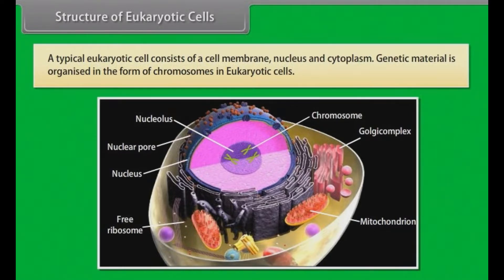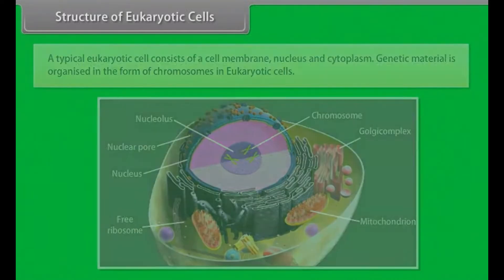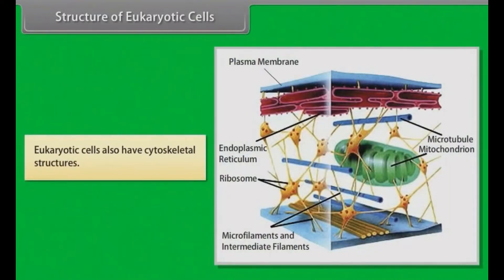A typical eukaryotic cell consists of a cell membrane, nucleus, and cytoplasm. Genetic material is organized in the form of chromosomes in eukaryotic cells. Eukaryotic cells also have cytoskeletal structures.